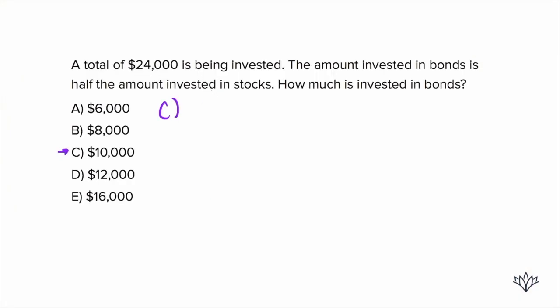Remember, the question is asking how much is invested in bonds? So it lets us know the total is $24,000. So we can say equals $24,000. And then we know bonds and stocks are what we're investing in. And it's asking about the bonds. So let's just say B and then S.